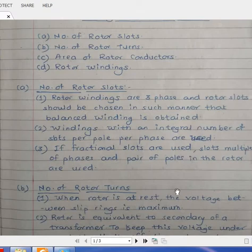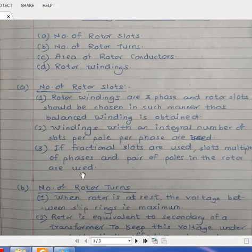The second point: you have two options when choosing slots for wound rotor induction motor. First is you can have an integral number of slots per pole per phase, or you can have fractional slots. But the important point is when you have fractional slots, your slots must be multiple of phases and pair of poles in the rotor.